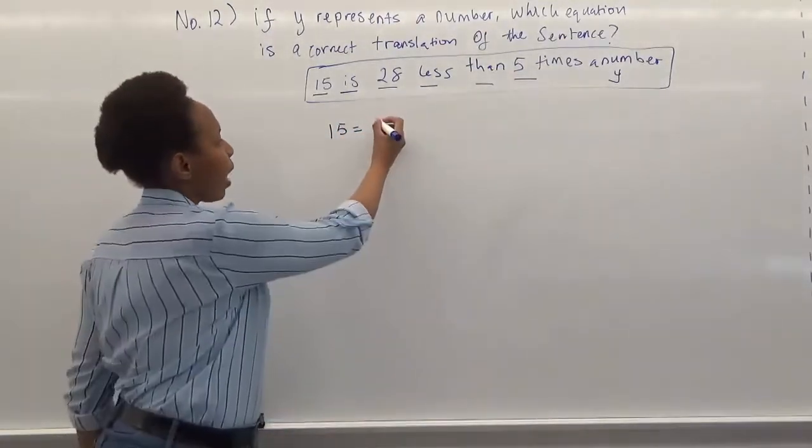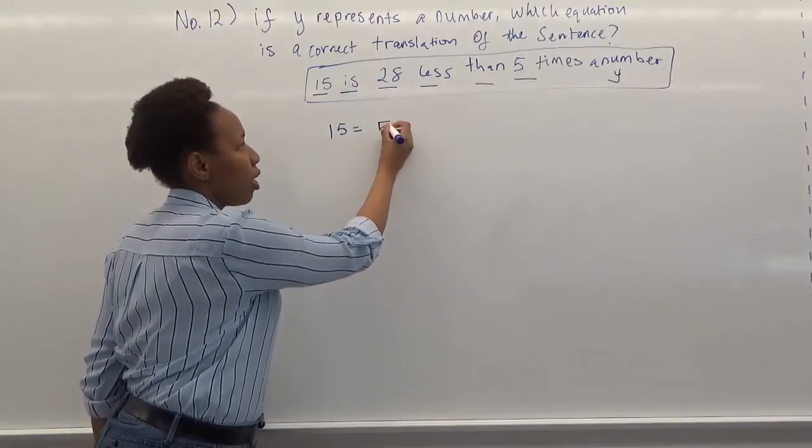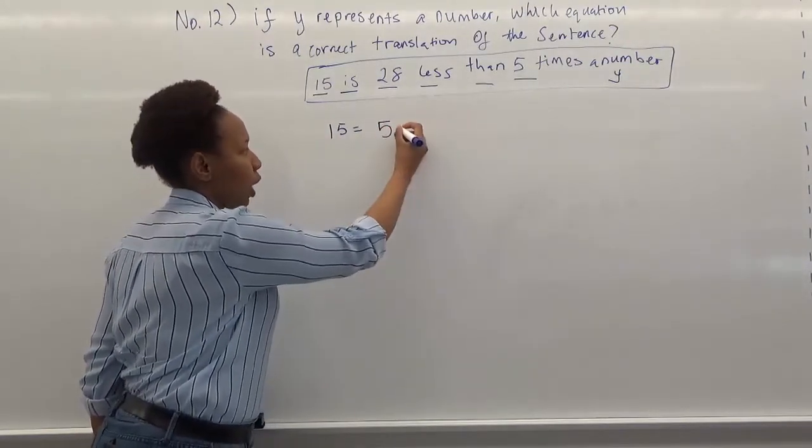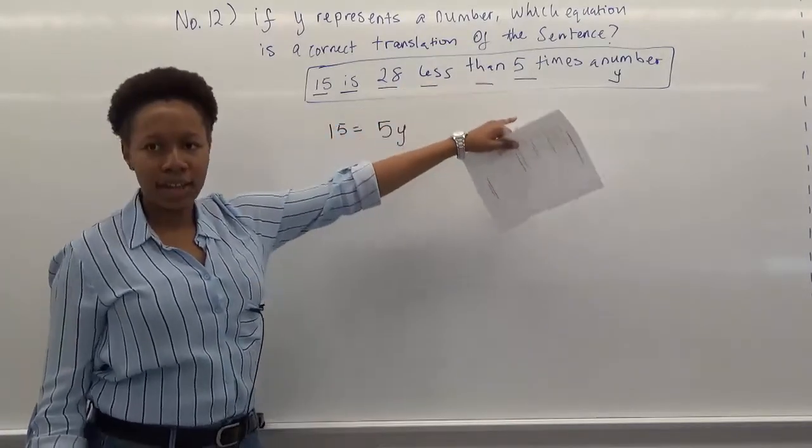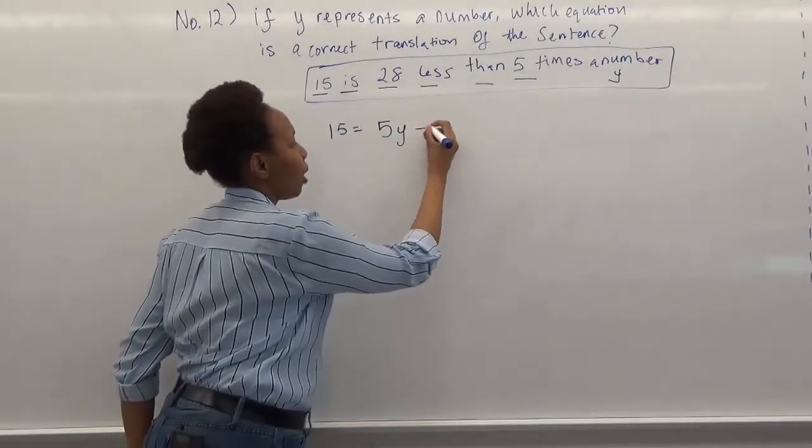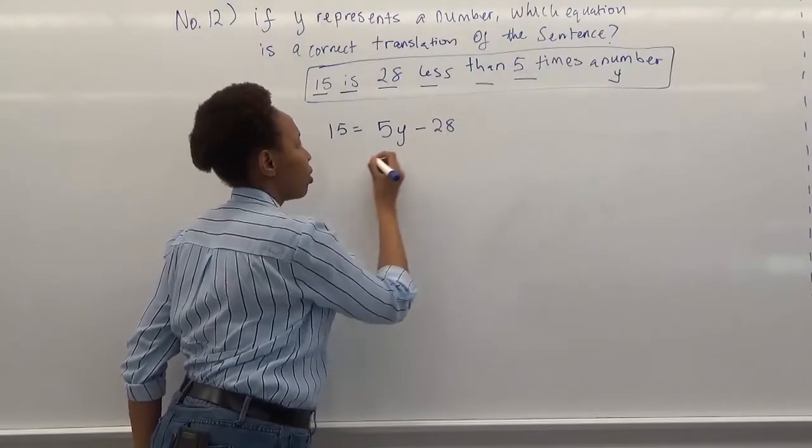So what we have is 5 times a number, and that number, which is y, and 28 less than that. And then we have minus 28. And this is your equation.